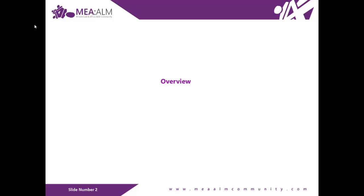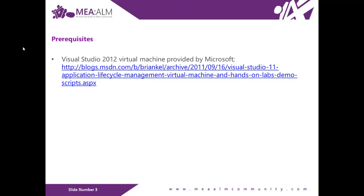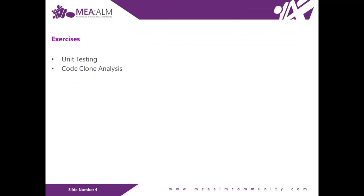Visual Studio 2012 will open the door for third-party unit testing adapters such as NUnit and xUnit.net. You will also learn about the new code clone capabilities, which go hand-in-hand with delivering high quality software by helping you identify blocks of semantically similar code. To complete this lab you will need the Visual Studio 2012 virtual machine provided by Microsoft. This hands-on lab includes two exercises: unit testing and code clone analysis.